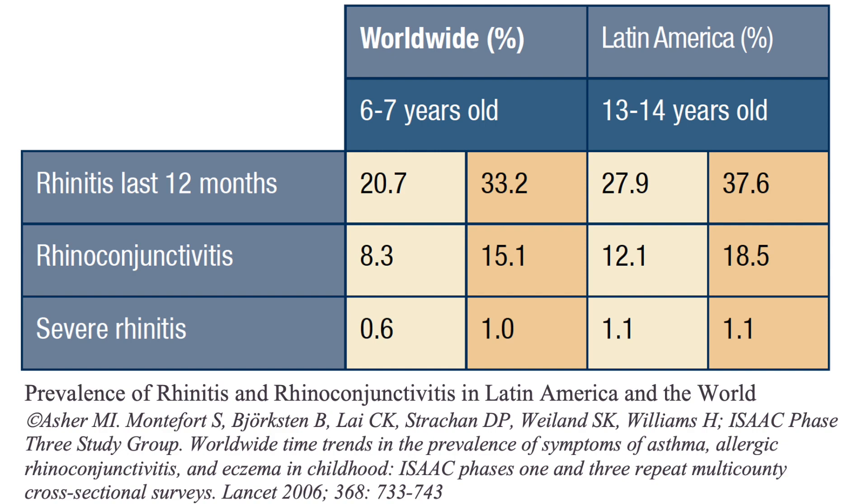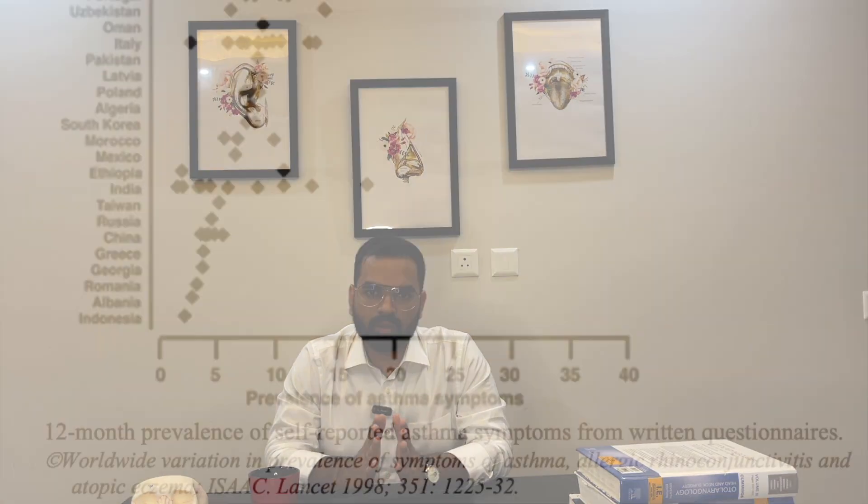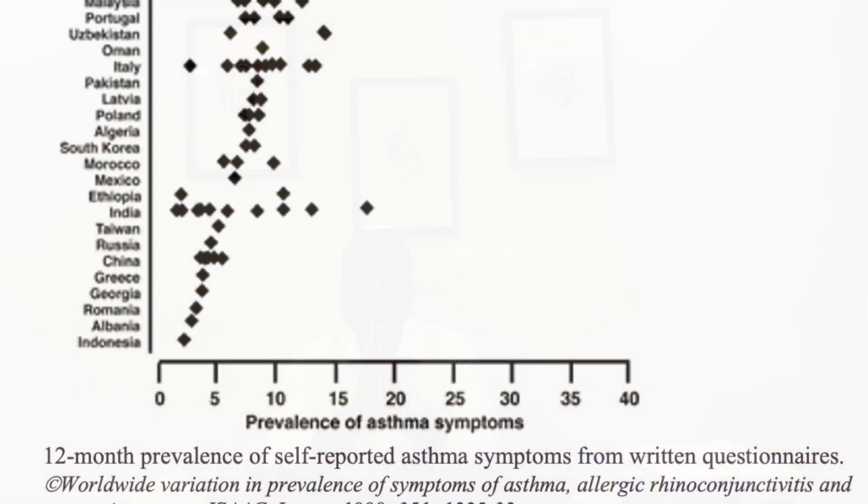Allergic rhinitis affects up to 25% of the pediatric population and up to 40% of the adult population. It is also closely related with asthma; about 15 to 38% of patients with allergic rhinitis also suffer from asthma, and 6 to 85% of patients with asthma have allergic rhinitis. Allergic rhinitis is itself a risk factor for asthma, and its treatment can lead to a decrease in the incidence and intensity of asthma.